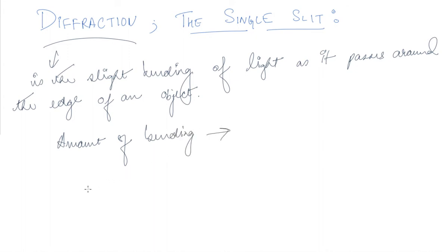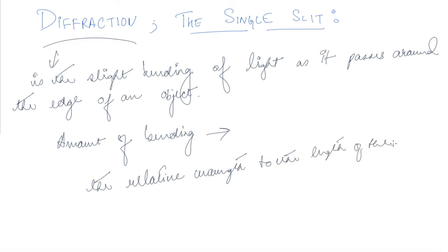The amount of bending depends upon the relative wavelength to the length of the opening. If the opening is much larger than the light's wavelength, the bending will be almost unnoticeable. For a small opening with a comparable wavelength, we will observe diffraction.